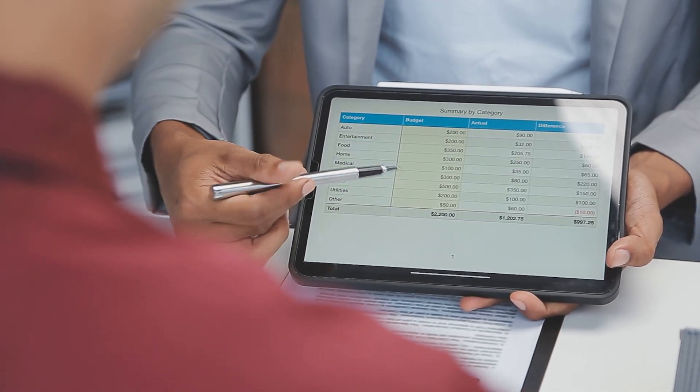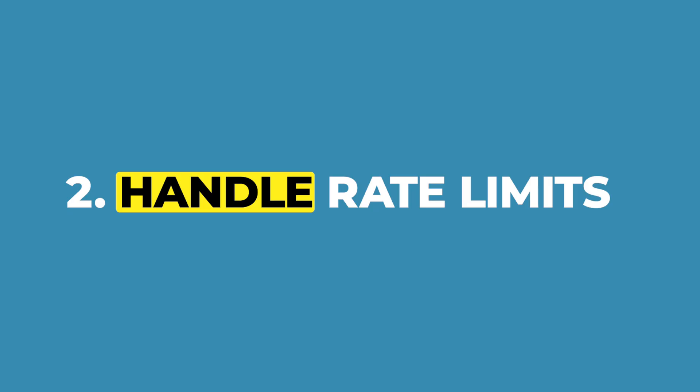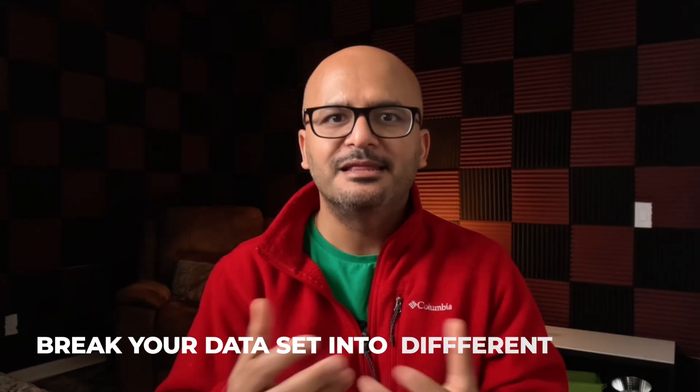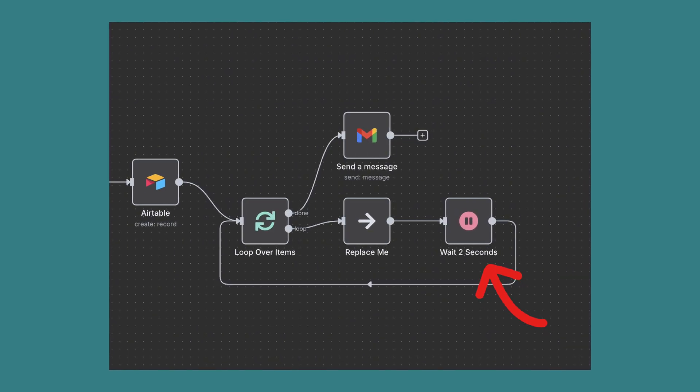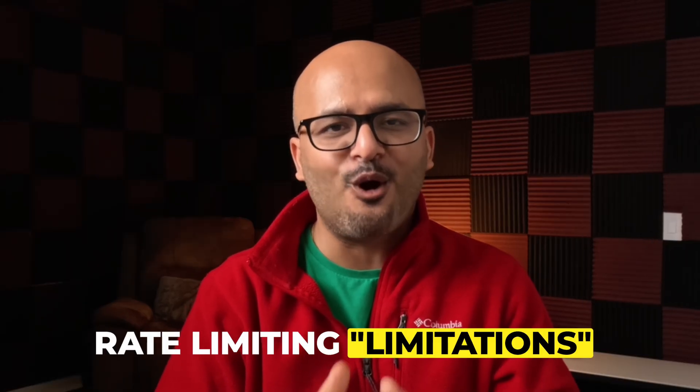What are some common examples of looping? Consider an example from past lessons where we fetch records of customers from a Google Sheet and process them one by one. But what if you need to process multiple batches together — a batch size of 10, 15, 20, or even 50? Another example is handling rate limits on API calls. Some APIs only allow you to send 100 emails per second. Looping lets you break your dataset into batches of 100 records, then apply a wait node for a few seconds before processing the next batch — overcoming rate limiting limitations.